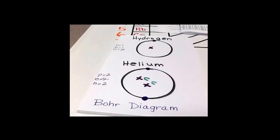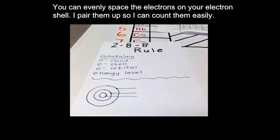And there are some rules that you have to know to be able to draw a Bohr diagram, because you may be wondering, how do you know where to put the electrons? So let's look at that next. For the Bohr diagram, you need to know the 2-8-8 rule.